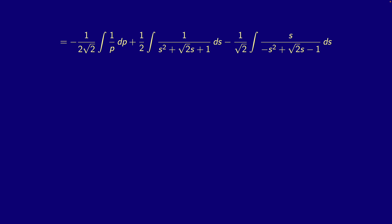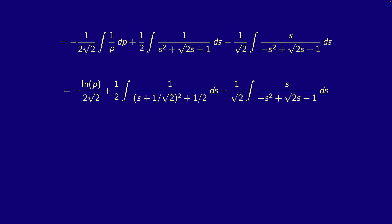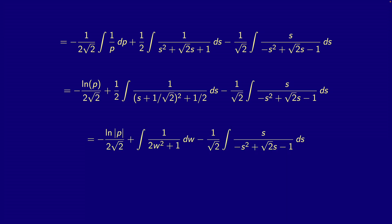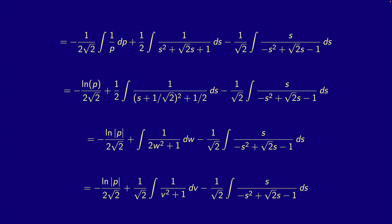Now it's easy — that integral is just going to be ln of the absolute value of p. So we get that result, and for our middle integral we complete the square, then let w be s plus one over √2, and dw equals ds. We substitute in v for √2·w and dv for √2·dw, which makes our middle integral arctan.